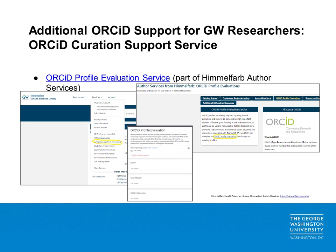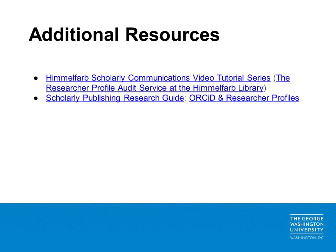If you are a GW researcher and would like additional help with your ORCID profile, there are a number of options. For students and faculty associated with the School of Medicine and Health Sciences, the School of Public Health, and the School of Nursing, additional support can be provided via the ORCID profile evaluation service. On the Himmelfarb Library homepage, go to the Services tab in the upper navigation and click on Author Services from Himmelfarb. Click on the ORCID Profile Evaluations tab and complete the ORCID Profile Evaluation Form for recommendations related to improving your ORCID profile. GW also provides a number of additional resources for researchers seeking assistance with curating their researcher profiles. Information about additional services, such as the Full Researcher Profile audit service, can be found as part of the Himmelfarb Scholarly Communications video tutorial series. The Himmelfarb Scholarly Publishing Research Guide also provides additional information about ORCID and other researcher profiles in the associated tab.